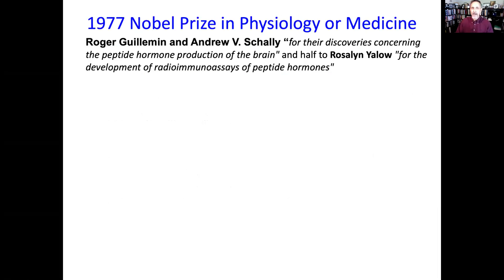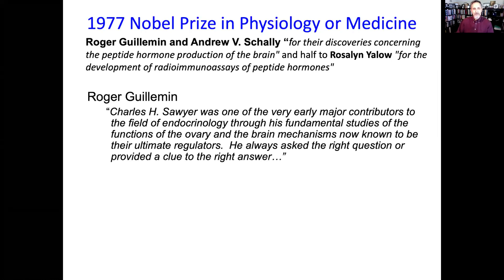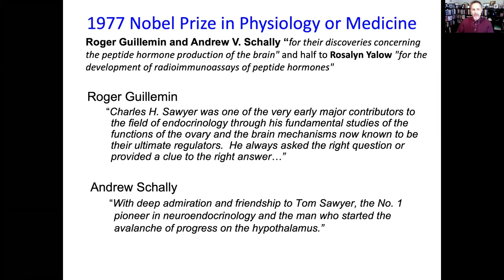You don't have to take my word for it. The 1977 Nobel Prize winners Roger Guillemin and Andrew Shally, who shared the prize with Rosalyn Yallow, spoke of Tom very highly. Guillemin said, 'Charles H. Sawyer was one of the first contributors to the field of endocrinology, through his fundamental studies of the function of the ovary and the brain mechanisms, now known to be their ultimate regulators.' Shally — not a particularly good friend of Guillemin, as they were competitors for about 20 years — said with deep admiration: 'the number one pioneer in neuroendocrinology and the man who started the avalanche of progress on the hypothalamus.'